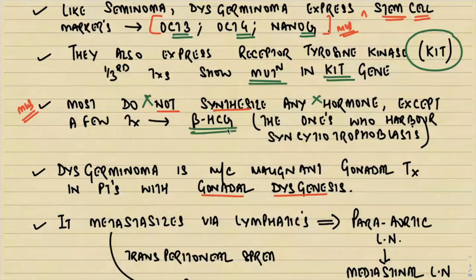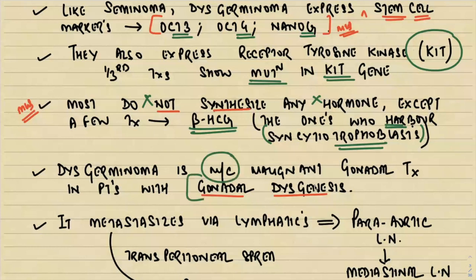Dysgerminoma is the only non-endocrine germ cell tumor — it does not synthesize any hormone by itself, except in rare cases where the tumor harbors placental syncytiotrophoblast, which can secrete beta-hCG. Beta-hCG is the hormone tested for pregnancy and is produced by syncytiotrophoblast. If dysgerminoma contains few syncytiotrophoblasts they might give positivity for beta-hCG, but as such there is no tumor marker. It is the most common malignant gonadal tumor in patients with gonadal dysgenesis.